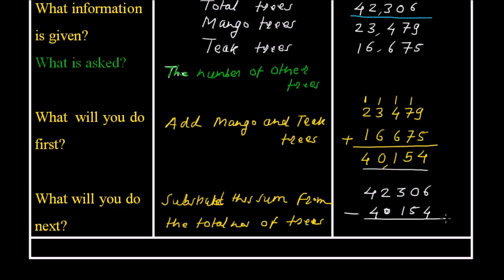6 minus 4 is 2. 10 minus 5 is 5. And this is 2. Now 2 minus 1 is 1. And 2 minus 0 is 2. 4 minus 4 is 0. So the other trees are 2,152.